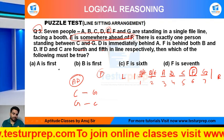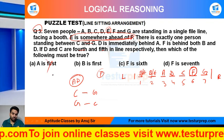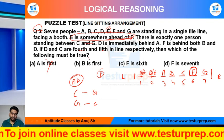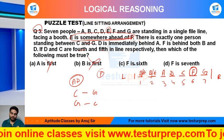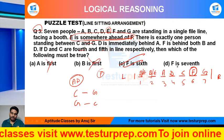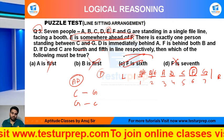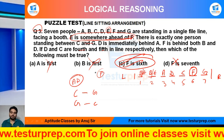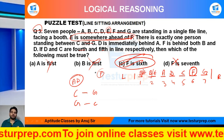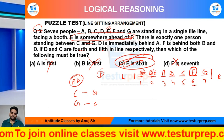A is first? No. B is first? No. F is sixth? F is seventh? No. So the option number is C. So this is the option here.